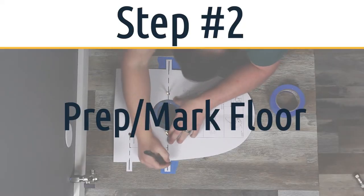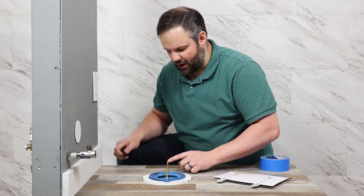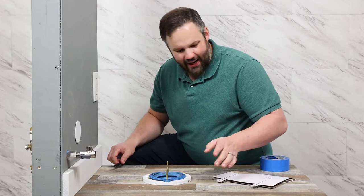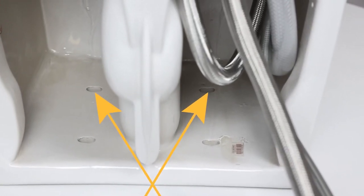So now we're going to in a minute be taking that toilet and putting it on top of these bolts. The tricky part is that we have to line up the inside of the toilet with these bolts, which can be hard to do.